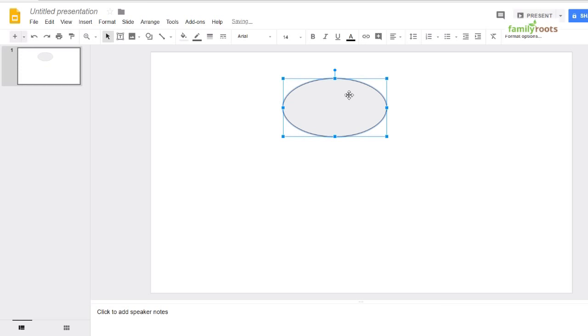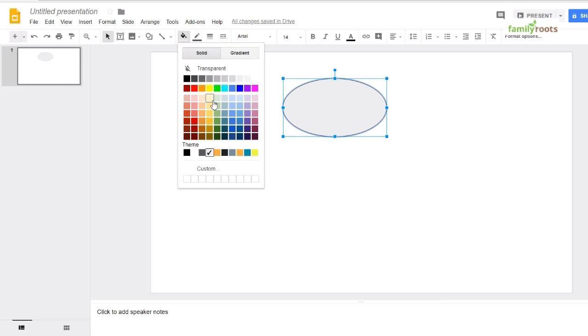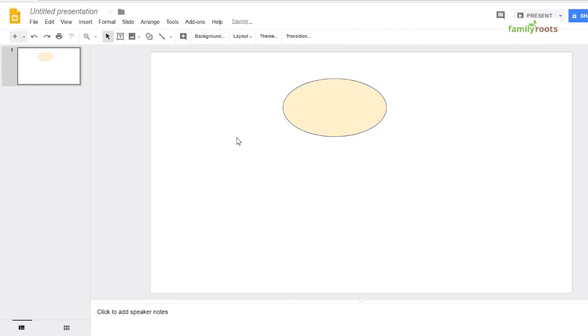Now, if you want to change the color, the infill color, you would come up here to fill color and we can make it yellow if we want. Now, in order to put text inside here, we need to come up to the text box.